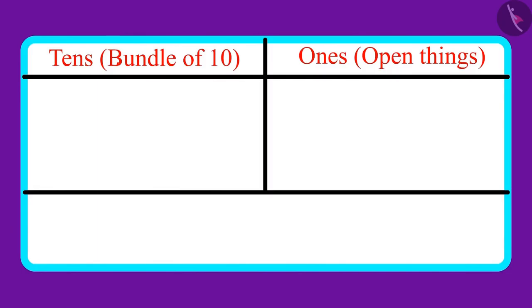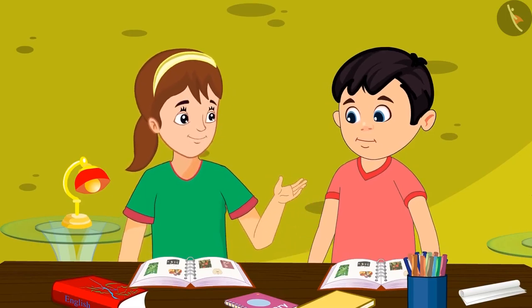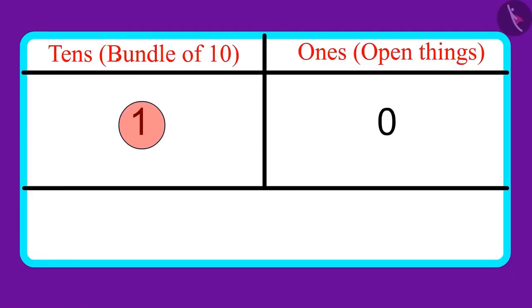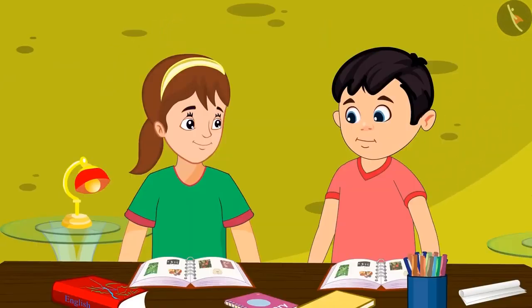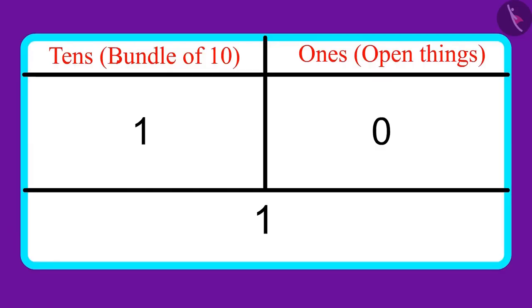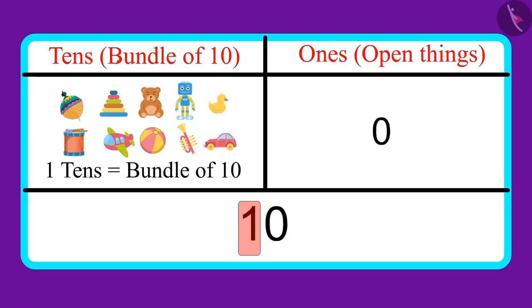There are one tens and zero ones in the number of toys. Is this wrong, Chotu? One tens and zero ones means you have just one toy, but there are many toys in the cupboard. No, Aarni, it doesn't mean one. One tens means a bundle of ten. That means I have ten toys. Did you understand?